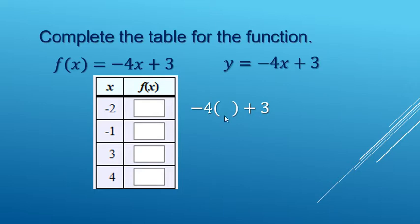For this row, the x is a negative 2. Now we do order of operations. Negative 4 times negative 2 is a positive 8, and then the addition plus 3 makes 11.